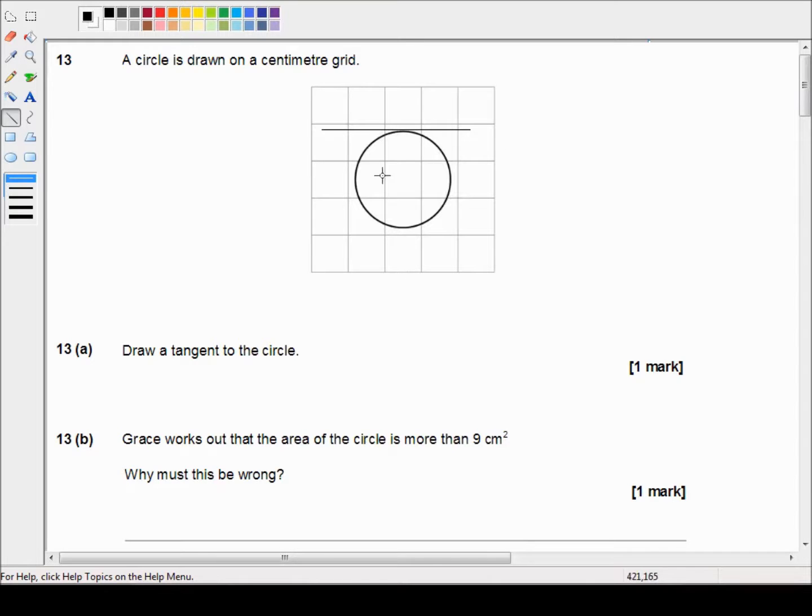And that's a tangent line. Again, it could be vertical, it could be diagonal in any orientation, so long as it just touches the circumference in one place only.